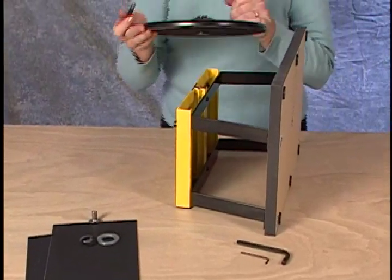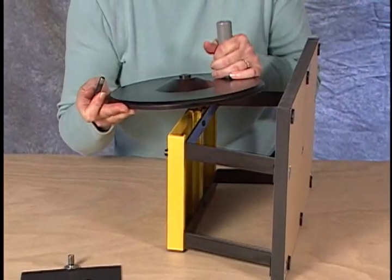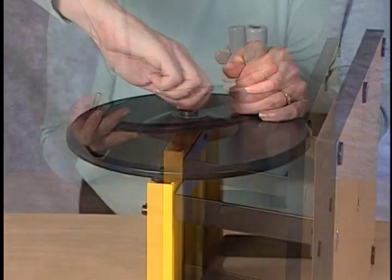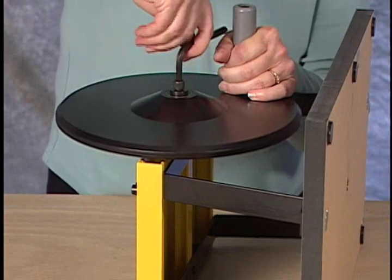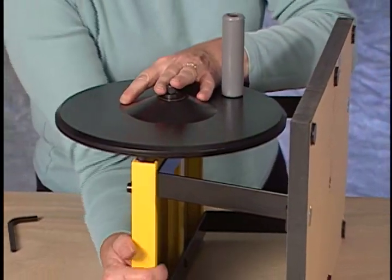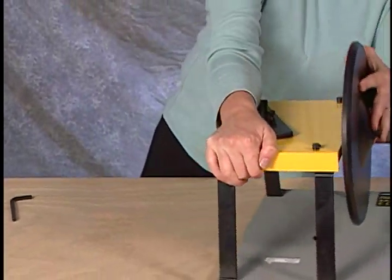To install the sanding wheel, place it on the side of the sanding base, insert the bolt and tighten with the allen wrench provided. Now you are ready to sand your molding.